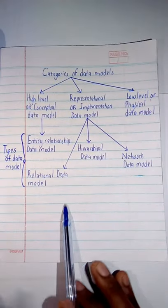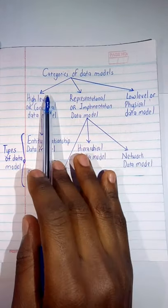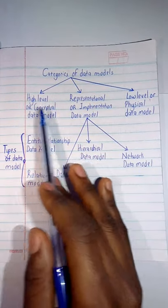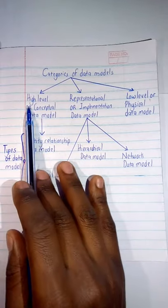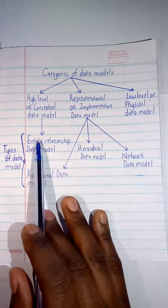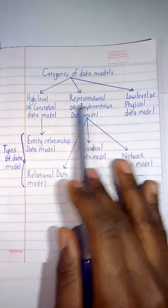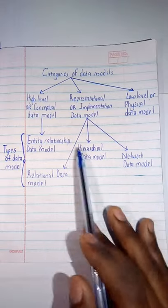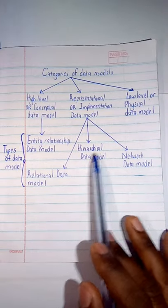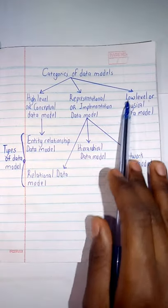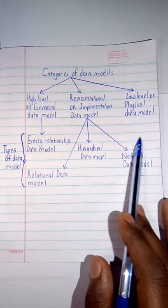Then moving on, the categories of data models: we are having under each category having different types underneath it. With high level or conceptual data model, we are having the entity-relationship data model. With the representational or implementation data model, we are having the relational data model, hierarchical data model, and the network data model. Now under the low level or physical data model, we don't have any type of data model under it.